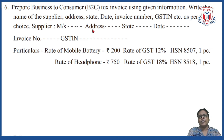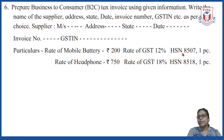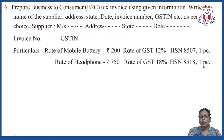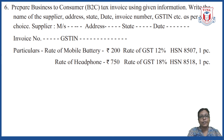The particulars provided are: mobile battery at rate rupees 200, GST rate 12%, HSN code given, quantity one piece. For the headphone: price rupees 750, GST rate 18%, HSN code given, quantity one piece. Recall the invoice format shown earlier and prepare all the required columns.